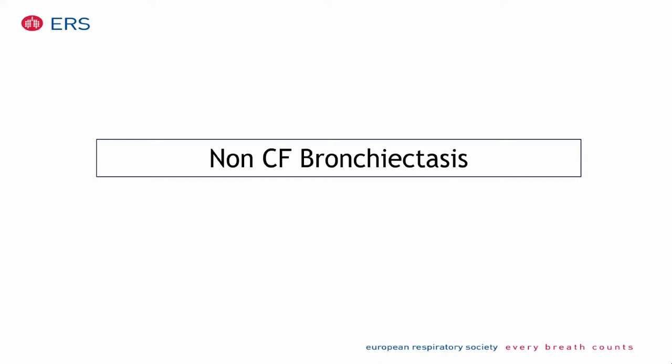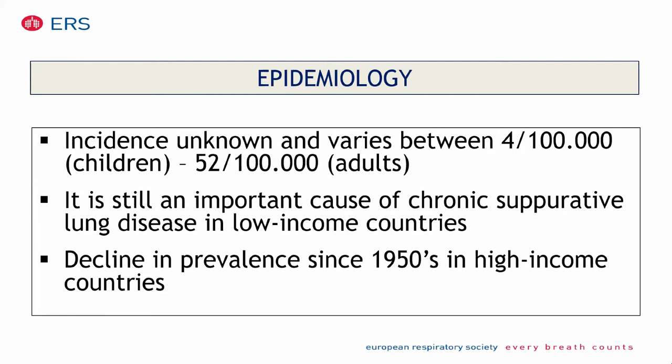Good morning to everybody. I will start with non-CF bronchiectasis and then on the second part of my presentation, I will move to primary ciliary dyskinesia. The real epidemiology — the incidence of bronchiectasis in children is not really well known, but it varies between four cases every 100,000 children. Comparing to adults, the incidence is 52 cases over 100,000 patient-persons. It is still an important cause of chronic suppurative lung disease in low-income countries. We know that there is a decline in prevalence in high-income countries in the last 50 years because of the wide use of antibiotics.